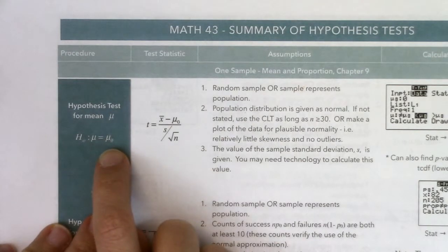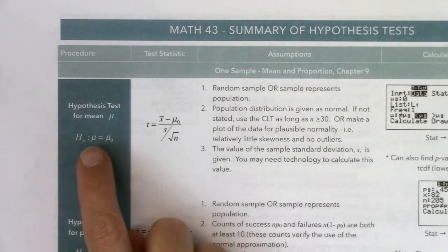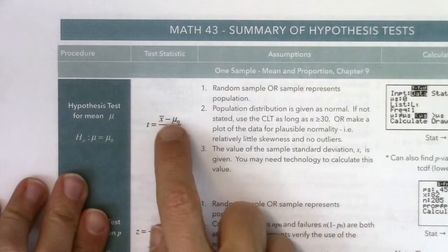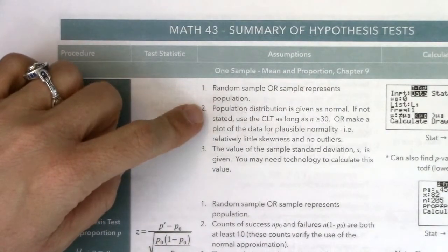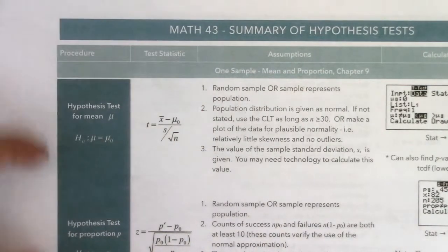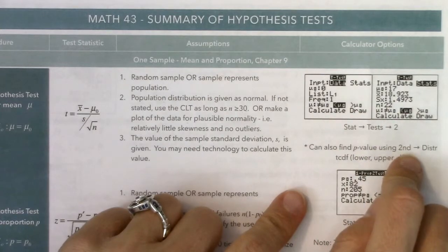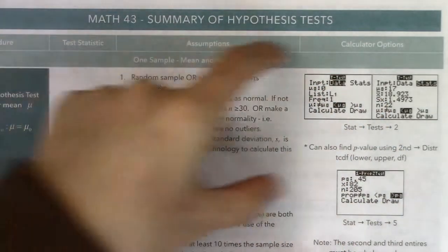We did an example where we were talking about a CEO and how much time her employees were spending on personal use of company technology, and we had mu equal to 75. In chapter 9, we had mu on one side and a number on the other side. Our test statistic was x-bar minus mu over s divided by square root of n. We had assumptions: a random sample, how do I get normality, what was the sample standard deviation. On your calculator we had stat test two — either data, statistics, or calculated.